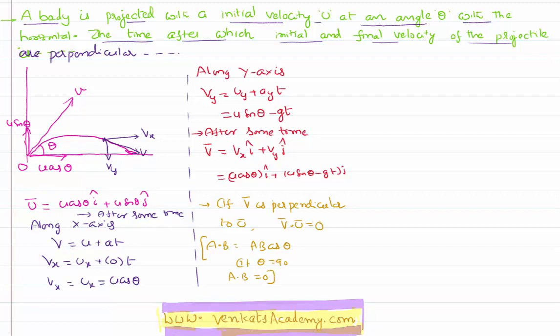That means, if any two vectors are perpendicular to each other, their dot product shall be equal to zero. So, I will find the dot product of these two vectors and I will equate it to zero. It implies, u bar dot v bar is equal to u cos theta i cap plus u sin theta j cap dot u cos theta i cap plus u sin theta minus gt j cap. It has to be equated to zero.